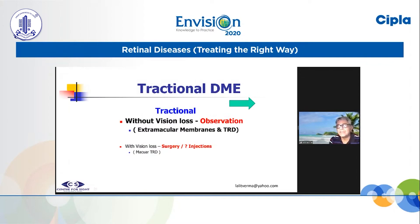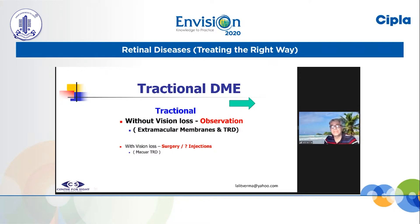If it's a tractional DME but there is no vision loss, that means the membranes or traction is extra-macular. Swapnesh was showing examples of this tractional DME and VMT. My treatment is observation, especially if vision is good and this is the only eye. With stable vision, extra-macular traction has to be observed.